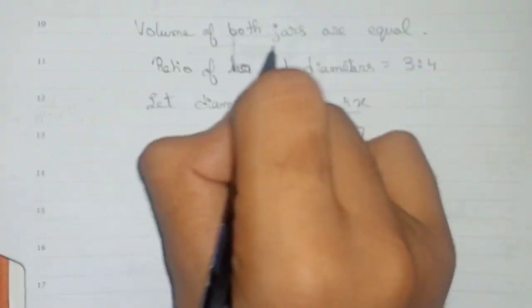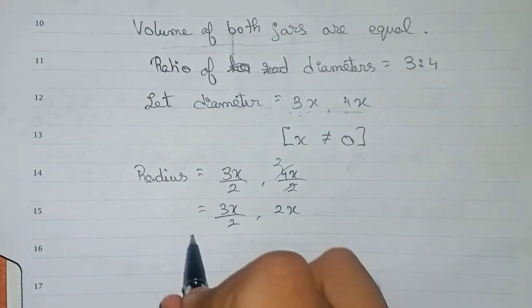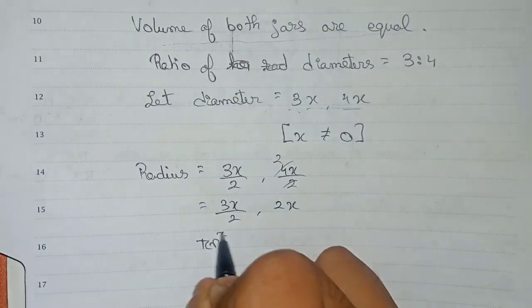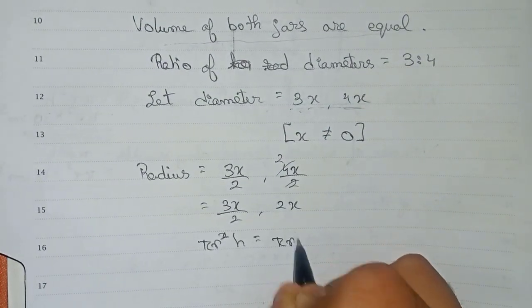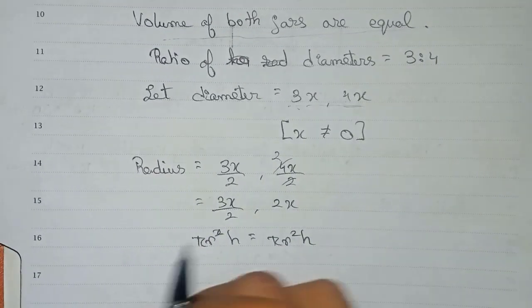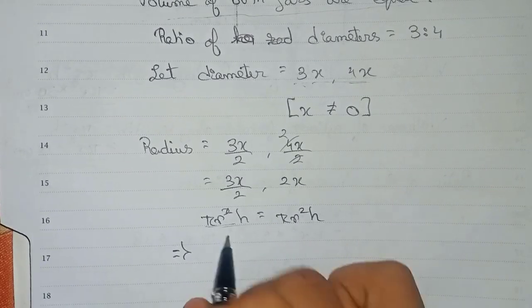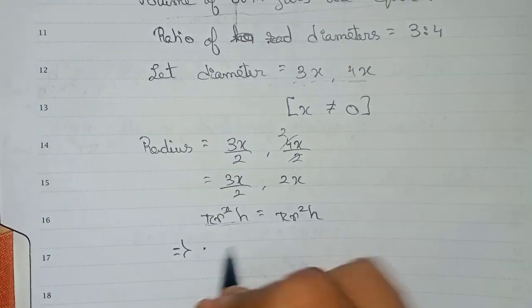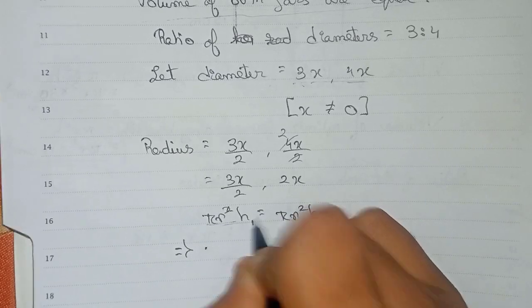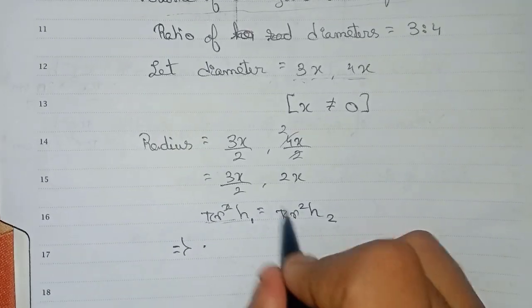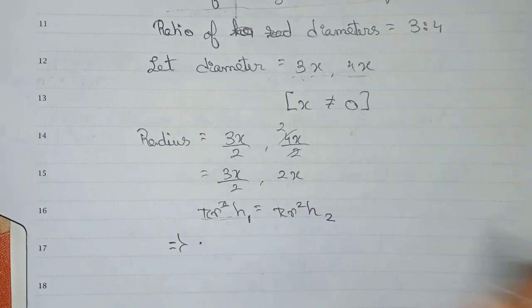Now as it is given volume of both jars are equal, you can write pi r squared h is equal to pi r squared h. That means both volumes you are writing. Here we write pi r squared h1 and here h2, as height is not equal, so h1 and h2 we are writing here.